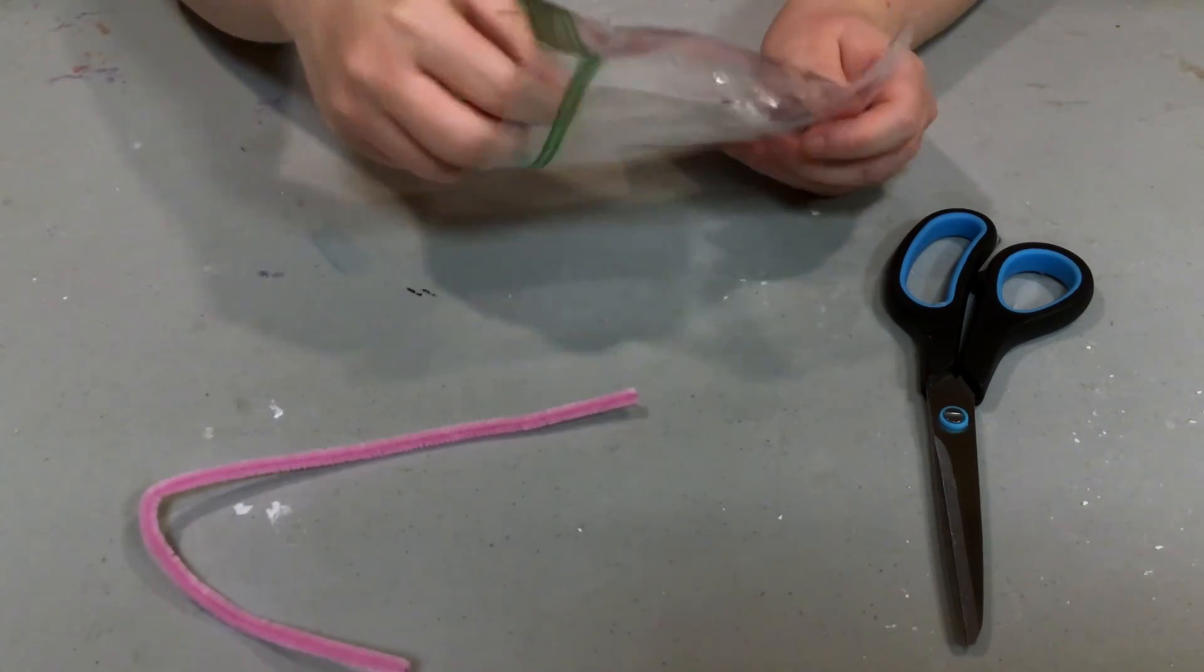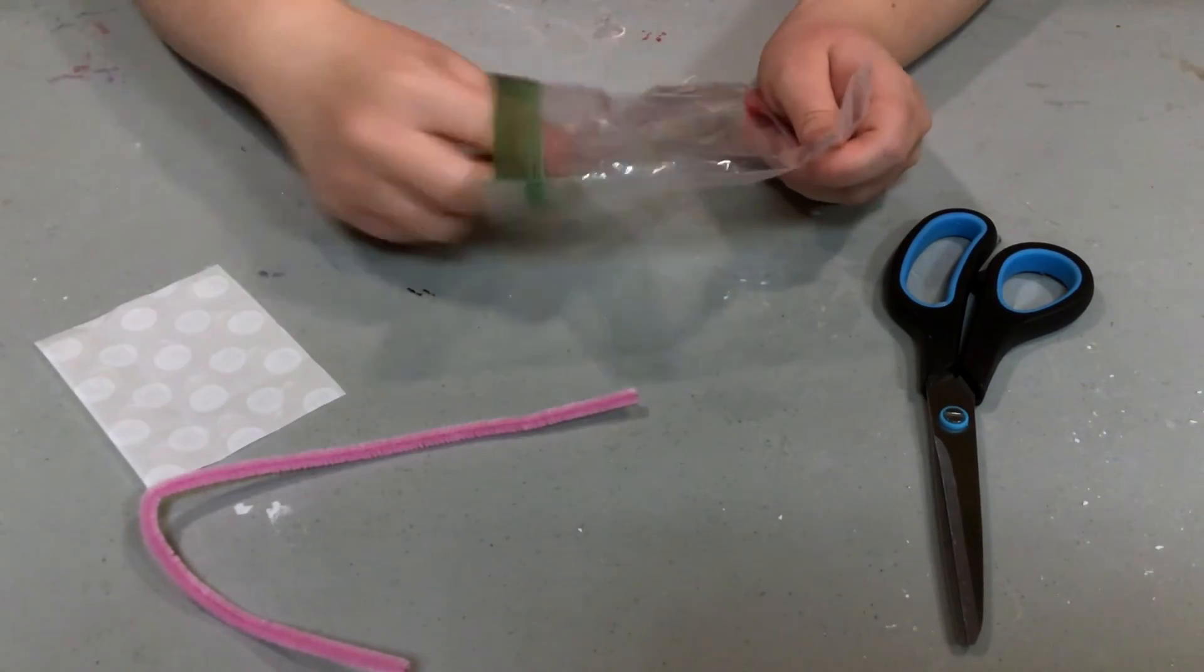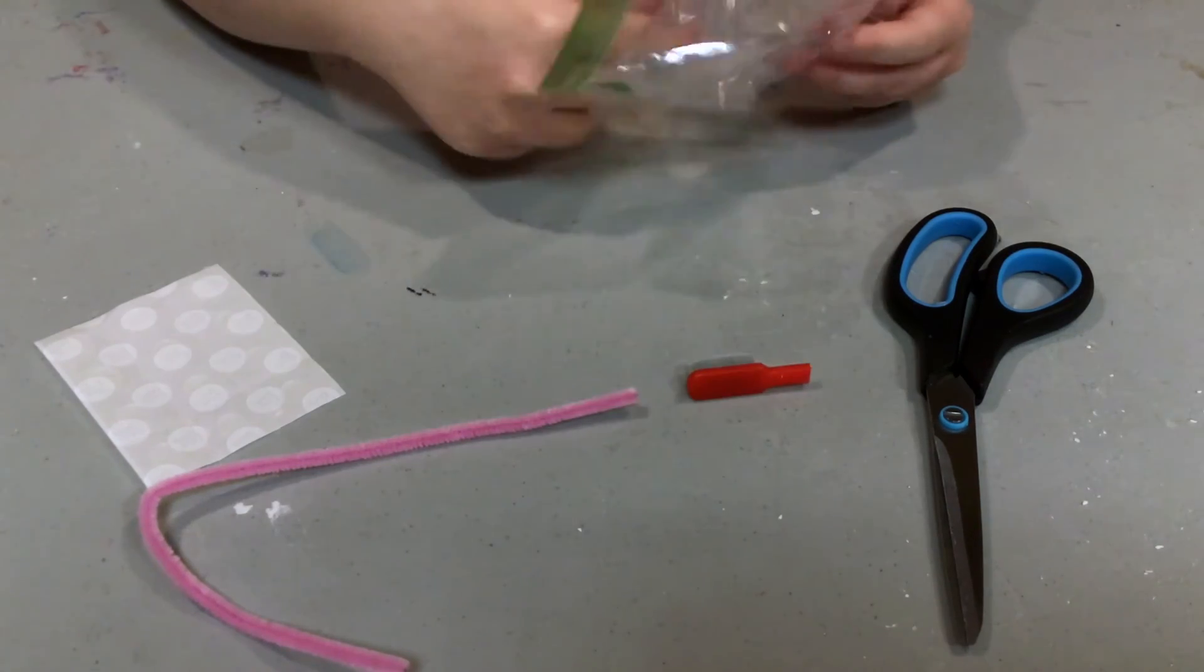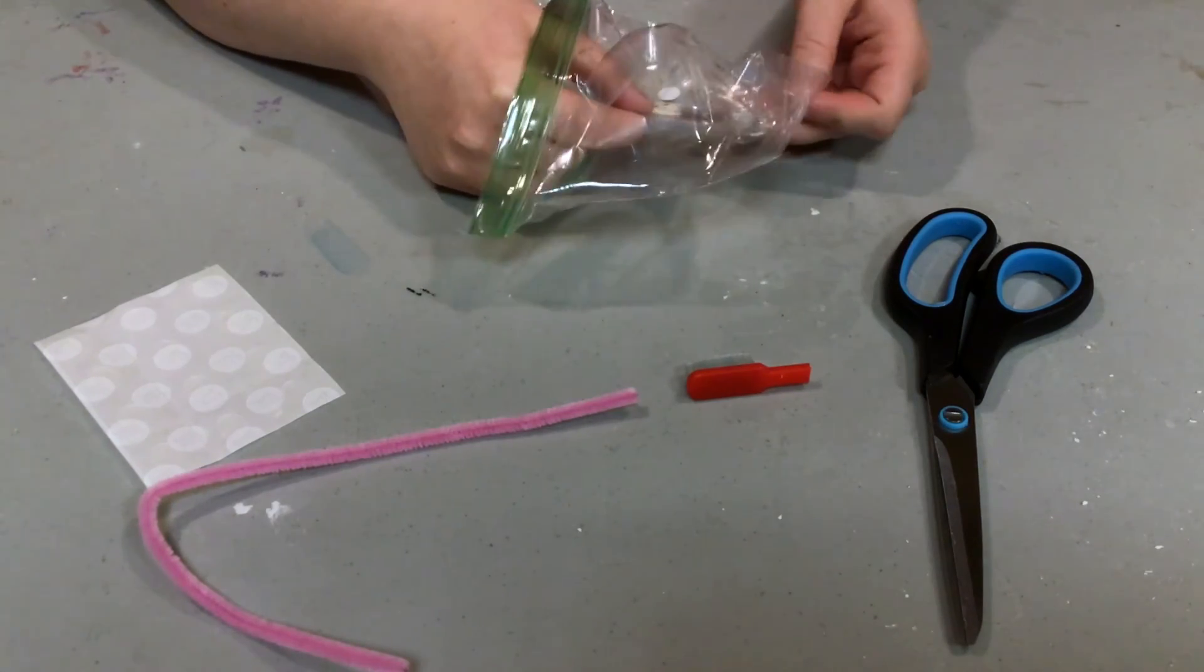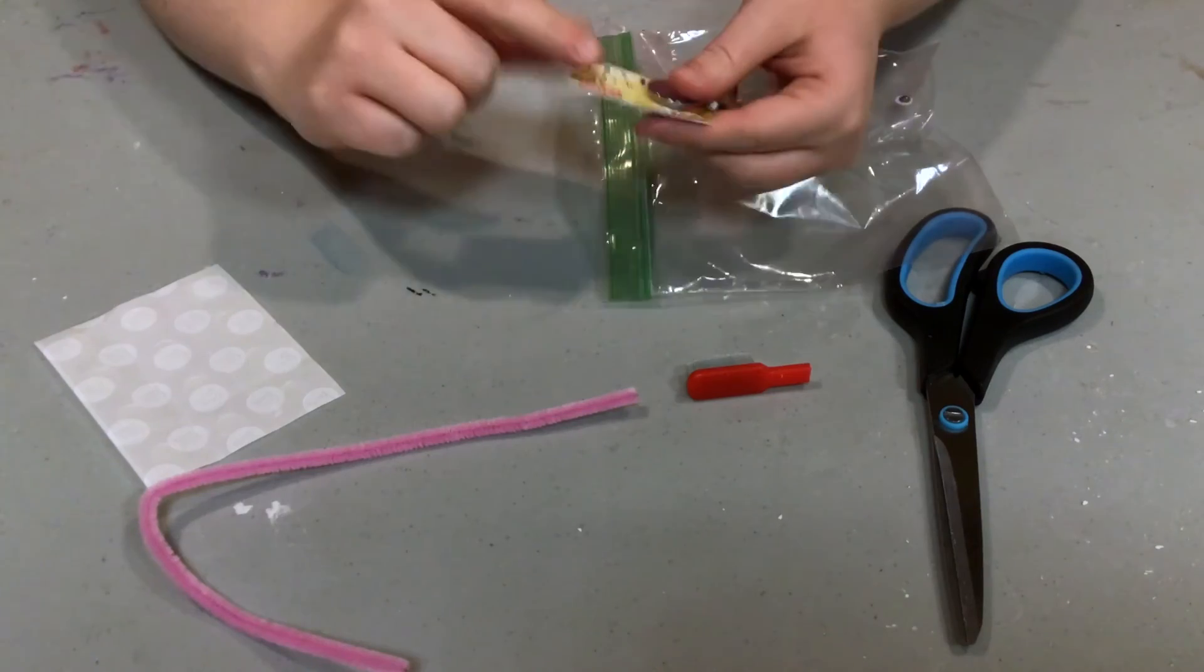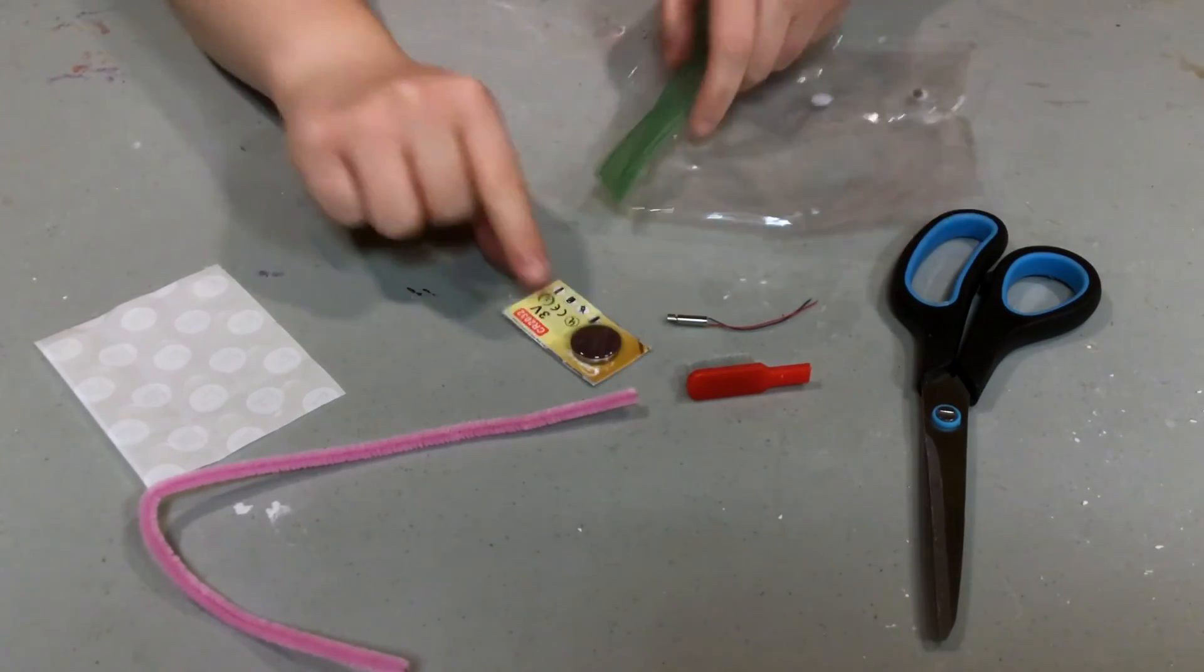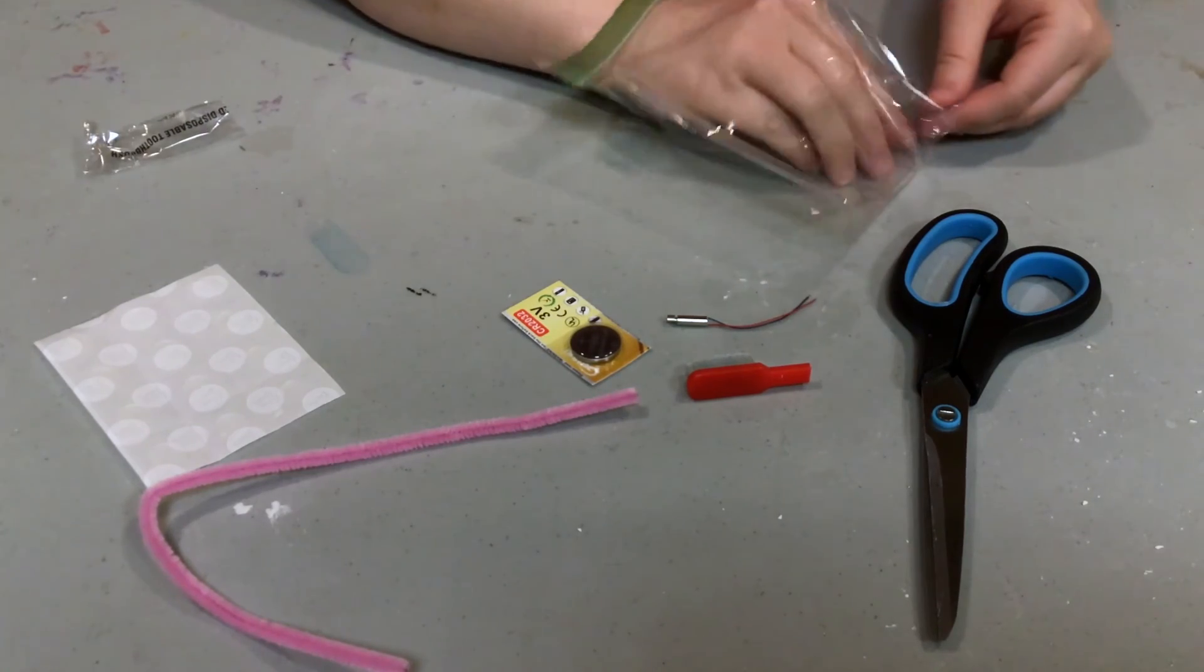We have a pipe cleaner, glue dots, your toothbrush head, and then two different batteries. We have the vibrating motor, and the small battery, and then two googly eyes.